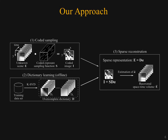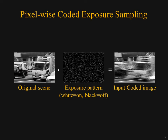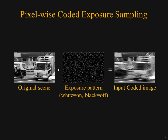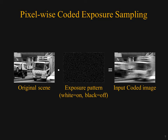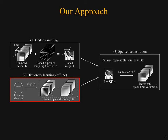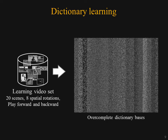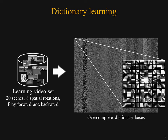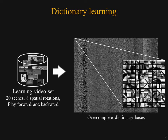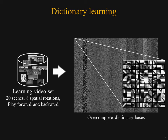Our technique has three main components. Our sampling scheme is designed while accounting for the restrictions imposed by current image sensors, and as a result it can easily be implemented in hardware. The next component is learning an over-complete dictionary from a wide range of videos. On the right is a sample of our dictionary bases — one pixel represents one video patch. The dictionary captures atomic video features such as edges shifting in various directions. For details of the sparse representation and reconstruction, please refer to the paper.